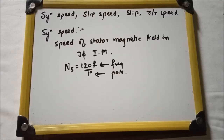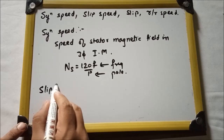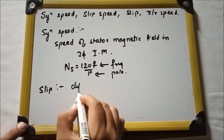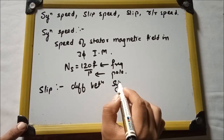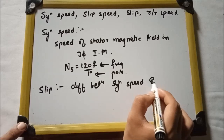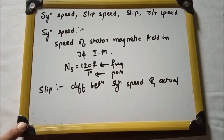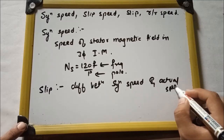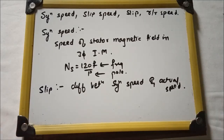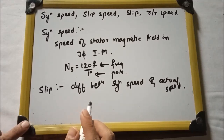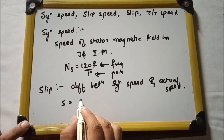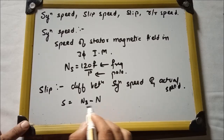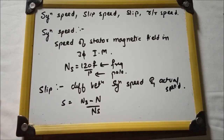Now, what is slip? The difference between synchronous speed and actual speed is known as slip. It is given as s = (ns − n) / ns.